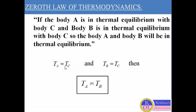If TA equals TC and TB equals TC, then in that condition the temperature of body A, TA, is automatically equivalent to the temperature of body B, TB. So TA and TB will be automatically in thermal equilibrium.